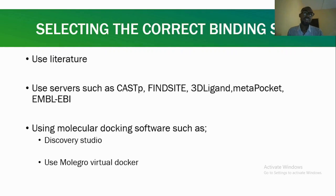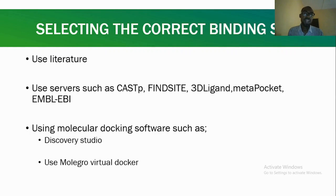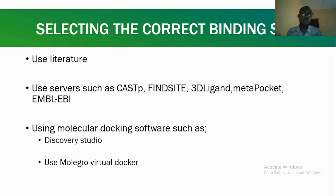Another key thing in molecular docking is selecting the correct binding site — what we call active sites. There are several ways to do that. You can use literature: when people publish drug research using molecular docking, they often give the coordinates for the binding sites, and given that their work has gone through peer review, it's expected to be reliable. You can also use servers such as CASTp, FPocket, SiteMap, or LigandMetal to get the correct binding site. You can also use molecular docking software like Discovery Studio, Molegro Virtual Docker, or PyMOL to get the correct binding site.